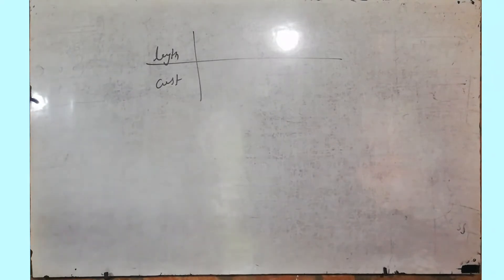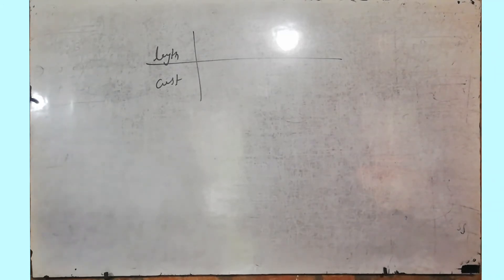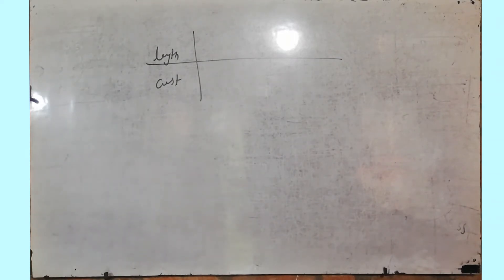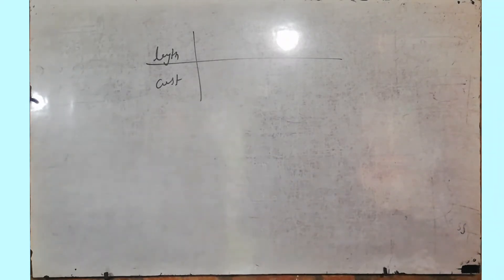Next question: in a model of a ship, the mast is 9 cm high while the mast of the actual ship is 15 meters high. If the length of the actual ship is 35 meters, how long is the model ship? Simple — 9 cm corresponds to 15 meters. For 35 meters, find how many cm. Set it up in a table: 15 and 9 are given, find X for 35 meters.